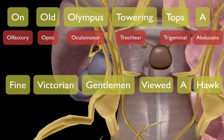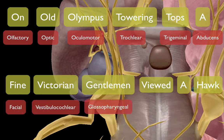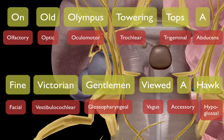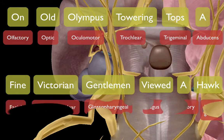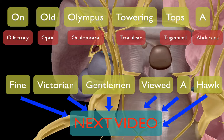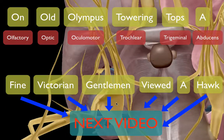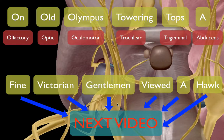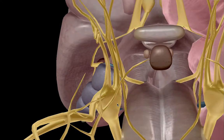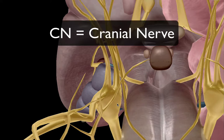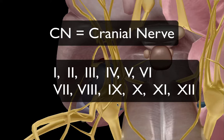...abducens — and that's where we'll stop in this video. The next six are facial, vestibulocochlear, glossopharyngeal, vagus, accessory, and hypoglossal, which will be covered in part two. As we go along, we'll give each cranial nerve its common name — which tips you off to its function — as well as its designation: CN followed by a Roman numeral.